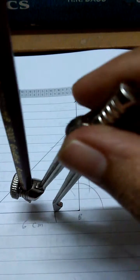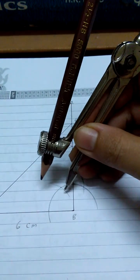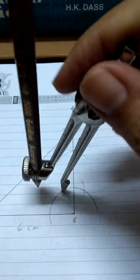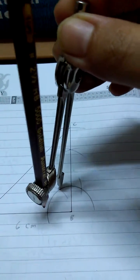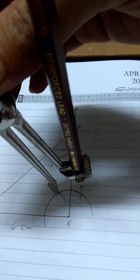You can see that this arc is intersecting this previous large arc at this point. You put your needle at this new intersection point and draw another arc, maintaining the same radius.